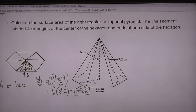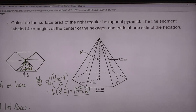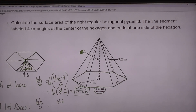Now we move on to the lateral faces. I want to look to see if all these triangles are the same. The pyramid height line has nothing to do with the lateral faces — get rid of that number. All the bases of the lateral triangles are the same: 4.6. The slant height is 7.2, and they're all 7.2 all the way around.